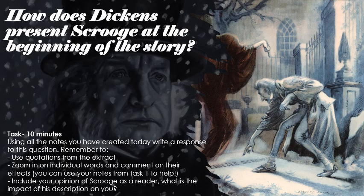Now your actual task — this is the one I want uploaded onto Class Charts so that I can give you all achievement points. I'm very impressed with the way most of you have picked up how to do that. The task: how does Dickens present Scrooge at the beginning of the story? We've collected lots of information about that. Using all the notes you've created today, write a response to this question. Remember to use quotations, zoom in on individual words and comment on their effects. You can use your notes from lesson one to help. Include your opinion of Scrooge as a reader — what is the impact of his description on you? I'd say ten minutes for that. Upload it to Class Charts so I can give you loads of achievement points.